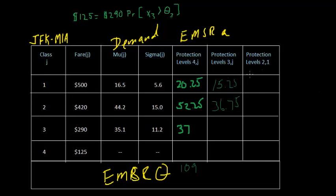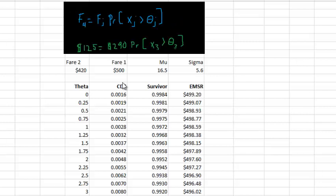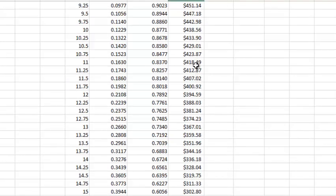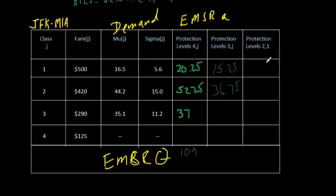And then finally, we have one protection to calculate here, fare Class 2 against 1. So we'll copy that over, and now we simply find the expected value, or the EMSR, of 420 again. And it's 11. So we're going to protect 11 seats for Class 1 against 2. So our last protection level is 11 seats for Fare Class 1 against 2. Then we can bring these totals down. This is 52, and this is just 11.